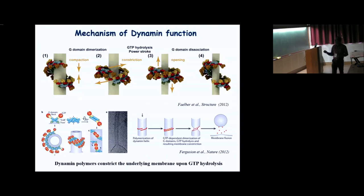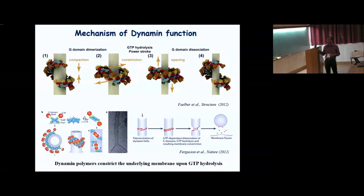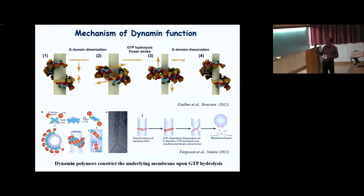In the neck of vesicle formation on the plasma membrane during endocytosis, dynamin self-assembles into a large structure. GTP hydrolysis leads to constriction of the underlying membrane — making a smaller diameter — and ultimately the conformational change brings two membranes together. This allows lipid to diffuse between two membranes and mix, leading to fusing of the membranes and pinching of a vesicle from the plasma membrane.